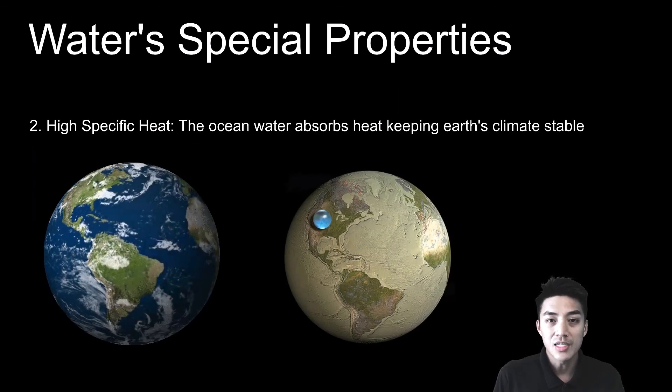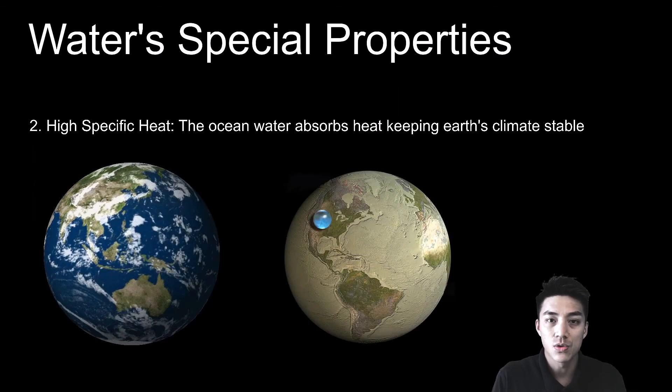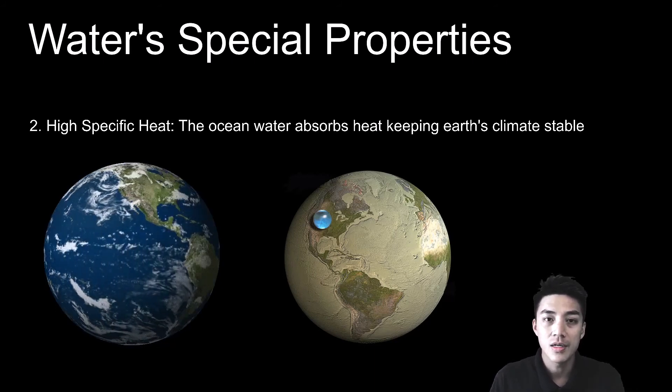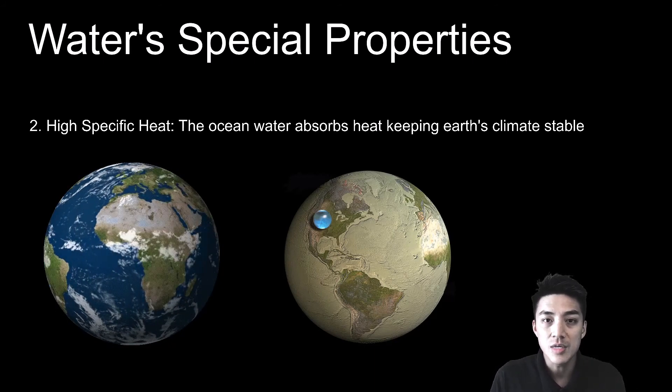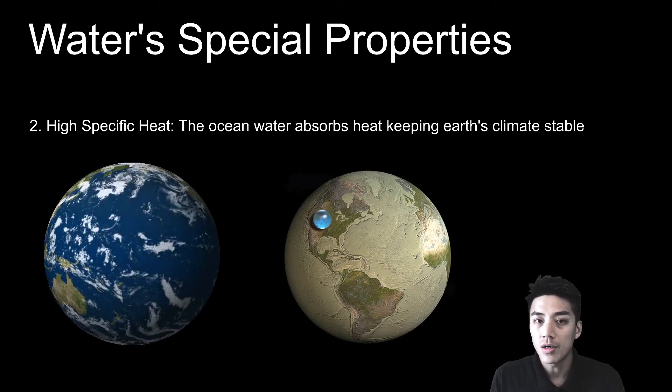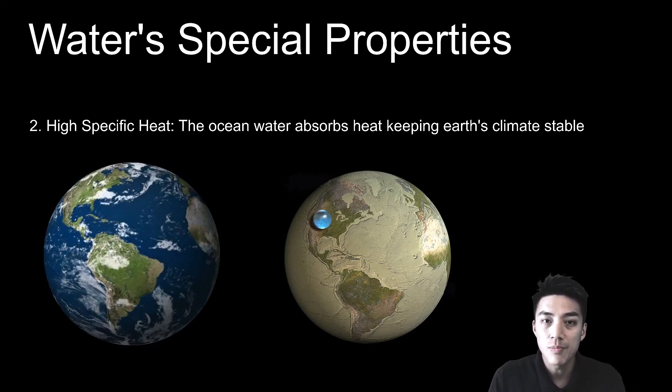Because of water's high specific heat, this allows our oceans to absorb a lot of heat from the sun and infrared sources, keeping our climate stable. Without the ocean's water, Earth would just be a dry, barren planet.